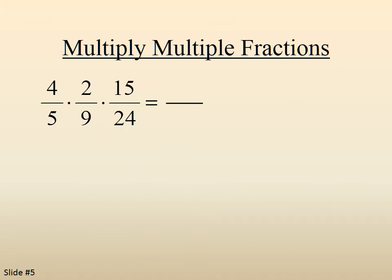Try this one. 4 fifths times 2 ninths times 15 24ths. If we multiply straight across, 4 times 2 times 15 is 120. 5 times 9 times 24 is 1,080.